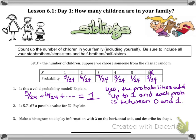My next question is: Is 5.7167 a possible value for X? Could there be a value between five and six here? The answer is no. We can only use actual whole numbers to describe a number of people.